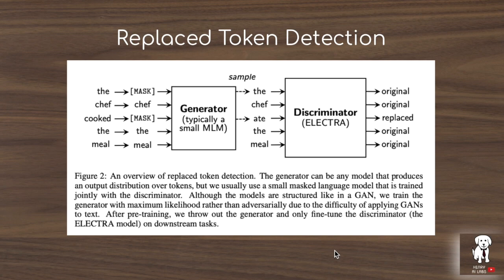This diagram illustrates the idea behind replace token detection. Compared to the previous masked language modeling technique introduced in BERT, where you have the input sequence and you replace 15% of the input tokens with the mask token, then you pre-train the transformer language model by having it predict the tokens that have been masked out in the masked language modeling pre-training objective.